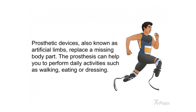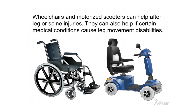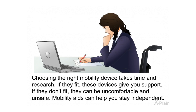Prosthetic devices, also known as artificial limbs, replace a missing body part and can help you perform daily activities such as walking, eating, or dressing. Wheelchairs and motorized scooters can help after leg or spine injuries or when medical conditions cause leg movement disabilities. Choosing the right mobility device takes time and research. If they fit, these devices give you support; if they don't fit, they can be uncomfortable and unsafe. Mobility aids can help you stay independent.